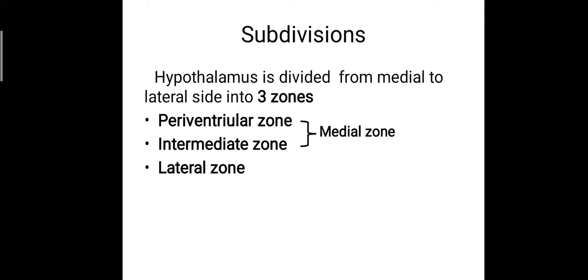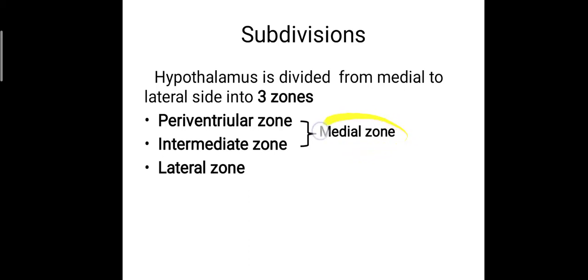The subdivisions of the hypothalamus: the hypothalamus is divided from medial to lateral into three zones — the periventricular zone, the intermediate zone, and the lateral zone. The periventricular and intermediate zones together are known as the medial zone. So grossly, the hypothalamus is divided into two zones: the medial zone and the lateral zone, while the medial zone is subdivided into the periventricular zone and the intermediate zone.